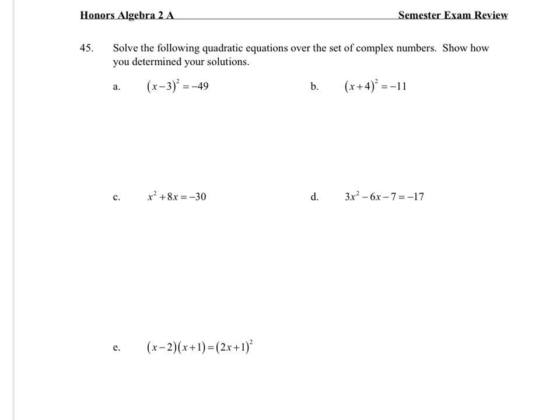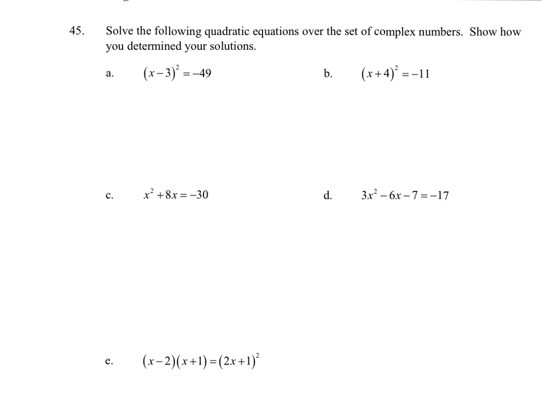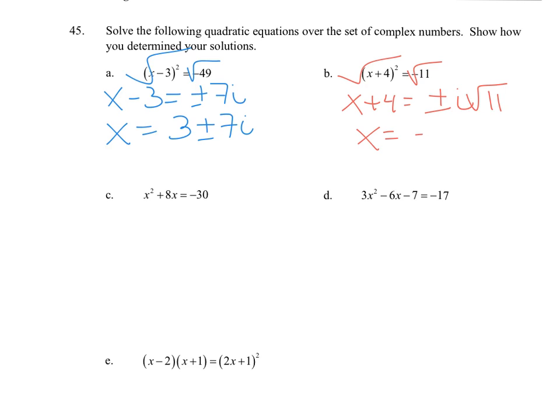Solve. So for a, I'm going to square root both sides, and then add the 3. Same thing for b, and then subtract the 4. When you square root both sides of an equation, don't forget your plus or minus.